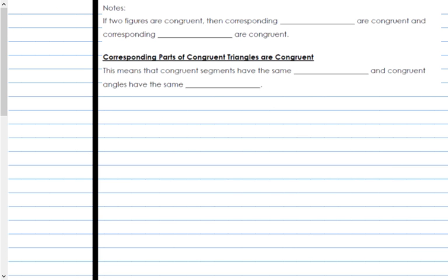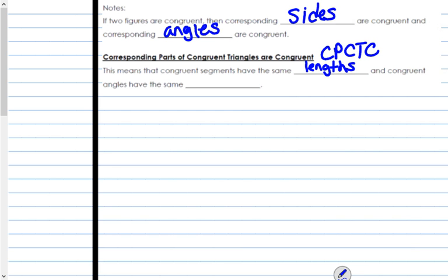If two figures are congruent, then corresponding sides are congruent and corresponding angles are congruent. There's actually a phrase that says corresponding parts of congruent triangles are congruent, and you'll see this written out as CPCTC. This means that congruent segments have the same lengths, and congruent angles have the same measures.